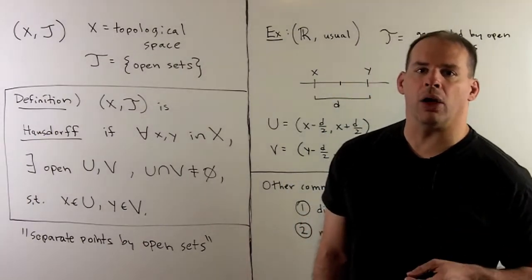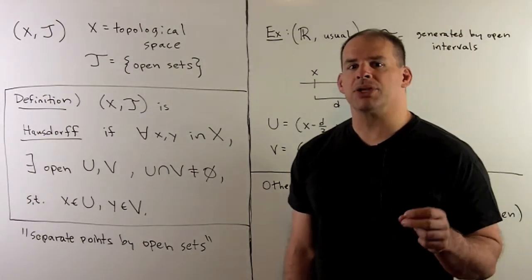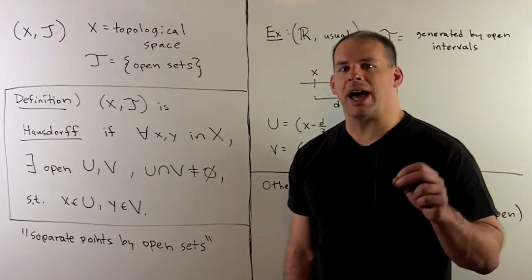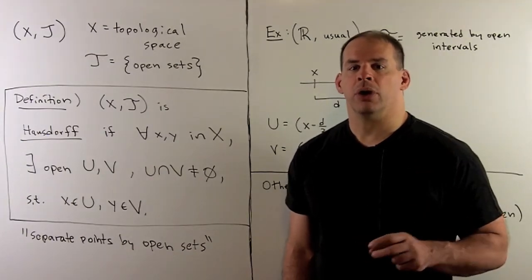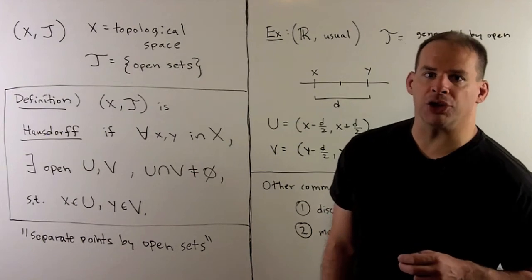In this video and the two that follow, we consider examples of topological spaces that are not Hausdorff. For this part, we'll consider the cofinite topology.